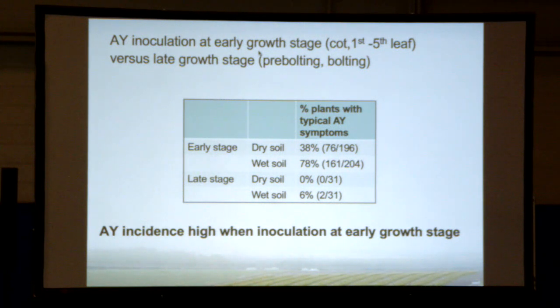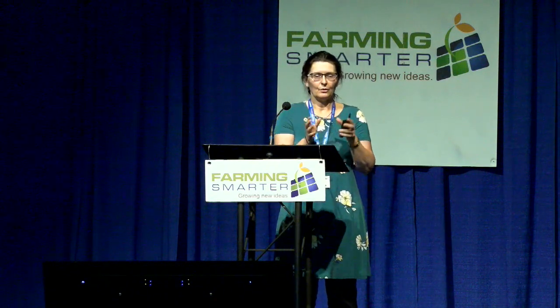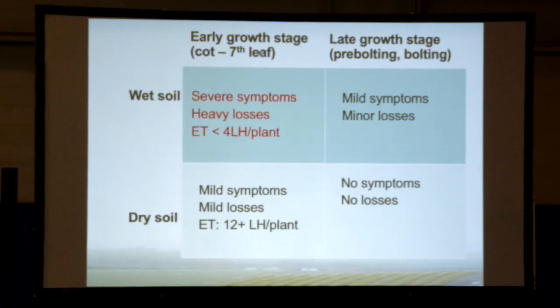When comparing inoculation at early stage versus late stage (pre-bolting and bolting), the percentage of plants with typical Aster Yellows symptoms — bladder-like pods — is very high in early stage: even in dry soil we still have 38% showing some symptoms. In late-stage inoculation, there is barely any symptom; in dry soil there is none at all, and in wet soil only 6% of plants show symptoms. The key message: if leafhoppers are highly infected, arrive at early canola growth stage, and conditions are wet and cold, you will have major problems. If it is the opposite, problems are far fewer.